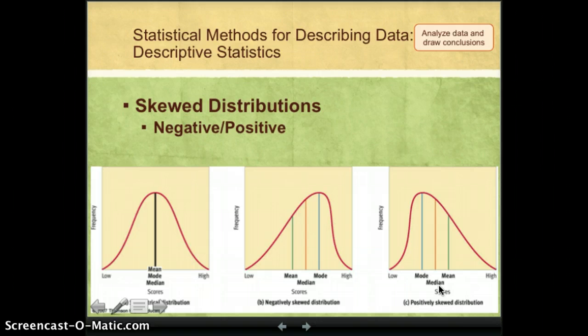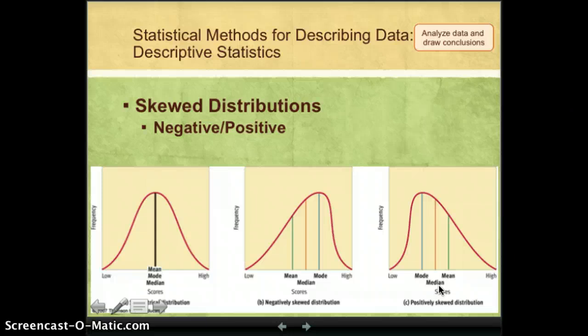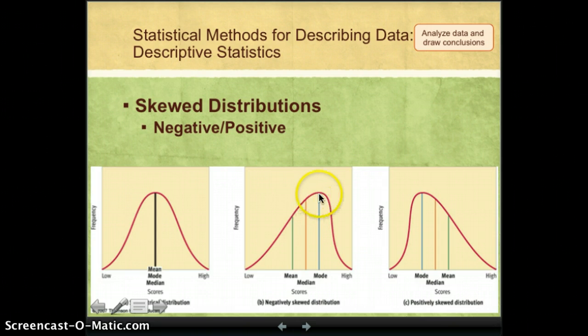If these three distributions were the distributions for the scores on the quiz, which distribution do you think most students would hope we had on that first quiz? Most students would be hoping for a negatively skewed distribution. That would mean that more students scored on the high end than on that lower end.